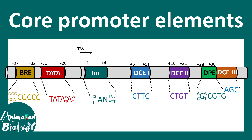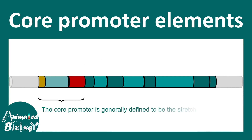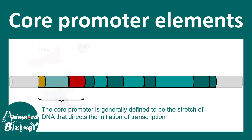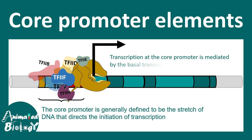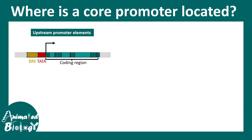In this video we'll talk about the concepts of core promoter elements. Core promoters are generally defined as a stretch of DNA that directs the initiation of transcription. General transcription factors bind to these core promoter elements and initiate the recruitment of RNA Pol2, thereby starting transcription. Transcription at the core promoter is mediated by the basal transcription machinery, or the pre-initiation complex.